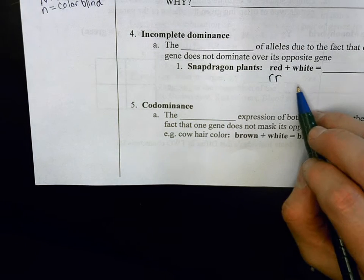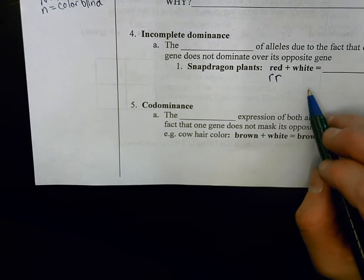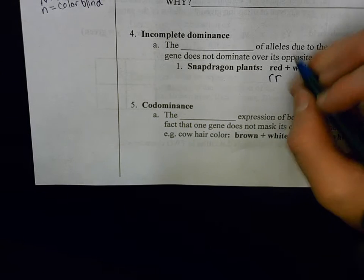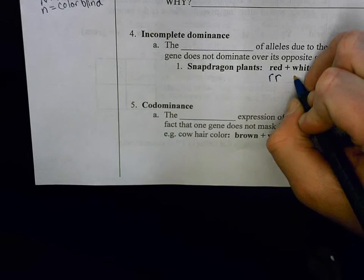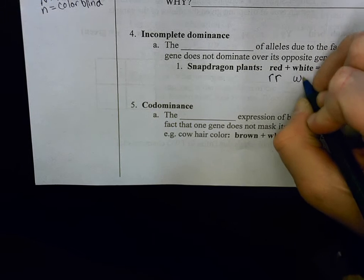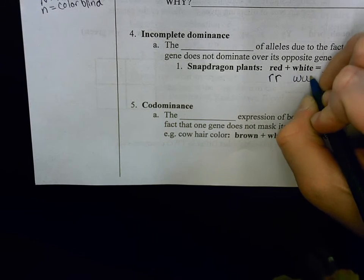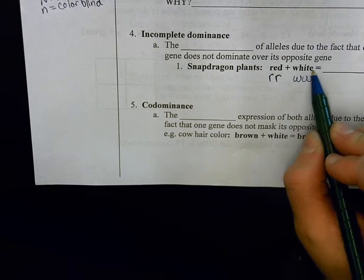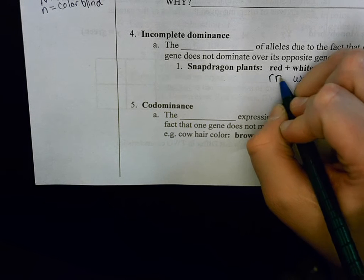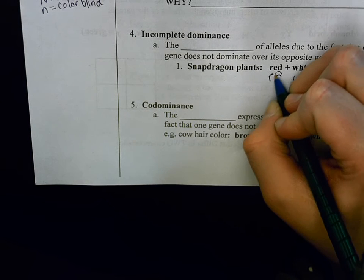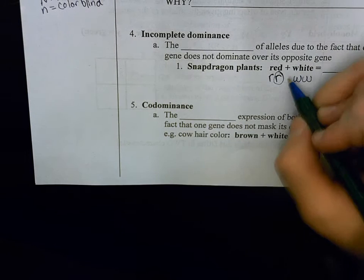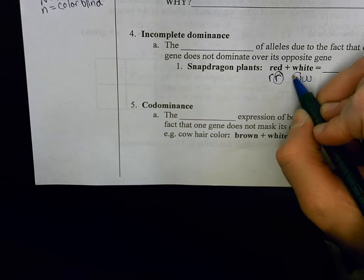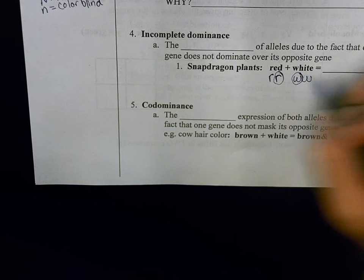And then we have white flowers, which are also not dominant, so we would show their alleles as little w, little w. Now, if a red mates with a white, the parent that's red would pass a little r.